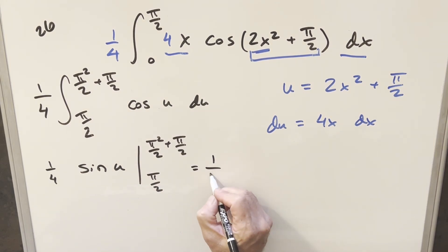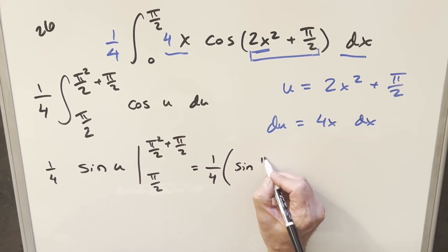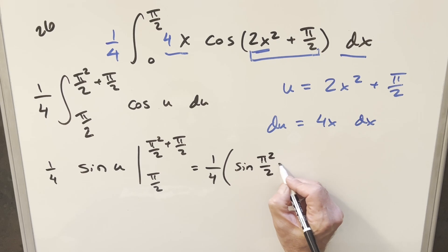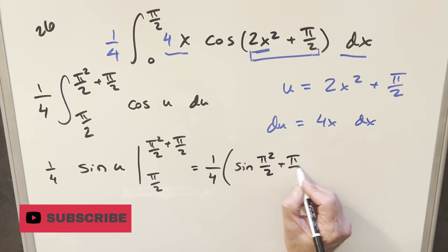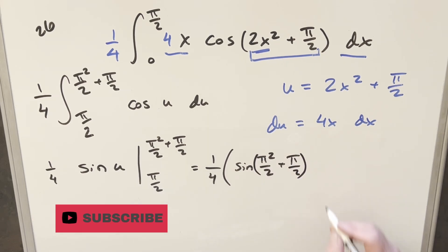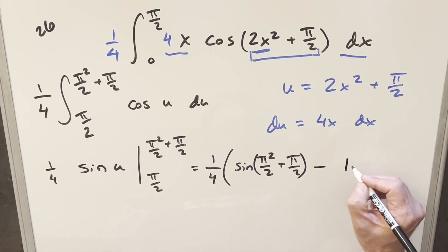So doing this, we'll pull this 1/4 out front. Evaluating at this upper bound, I'm just going to leave it because I don't really know how to simplify that right now. So we'll just leave it as sine of pi squared over 2 plus pi over 2, and then for the second part, we have minus sine of pi over 2, but that's just going to be a 1.